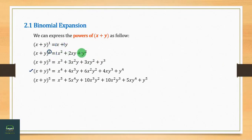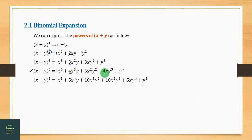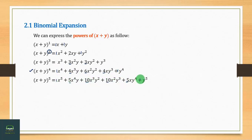The coefficients form Pascal's Triangle. The first row is: 1, 2, 1. The next row is: 1, 3, 3, 1. Then: 1, 4, 6, 4, 1. And finally: 1, 5, 10, 10, 5, 1.